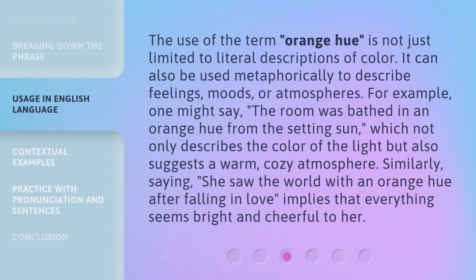The use of the term 'Orange Hue' is not just limited to literal descriptions of color. It can also be used metaphorically to describe feelings, moods, or atmospheres. For example, one might say, 'the room was bathed in an orange hue from the setting sun,' which not only describes the color of the light, but also suggests a warm, cozy atmosphere. Similarly, saying 'she saw the world with an orange hue after falling in love' implies that everything seems bright and cheerful to her.